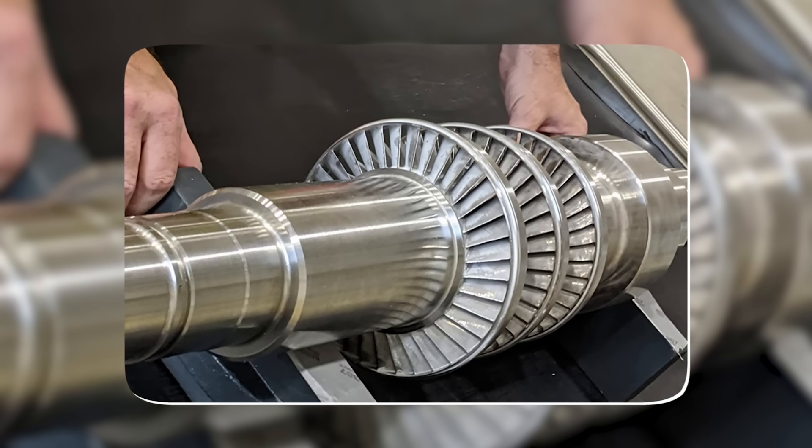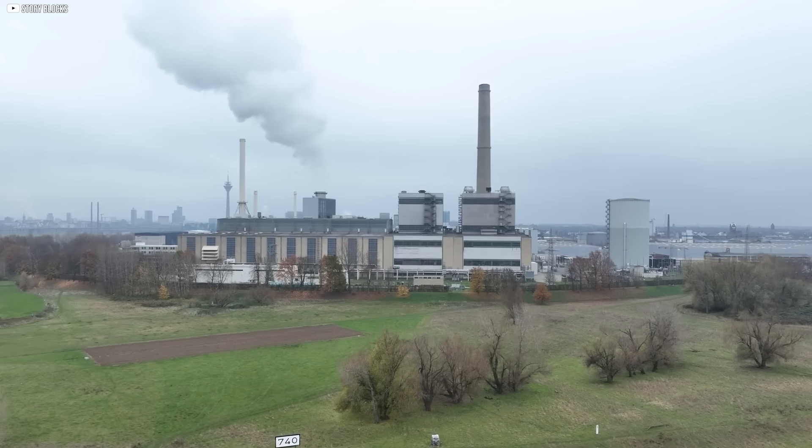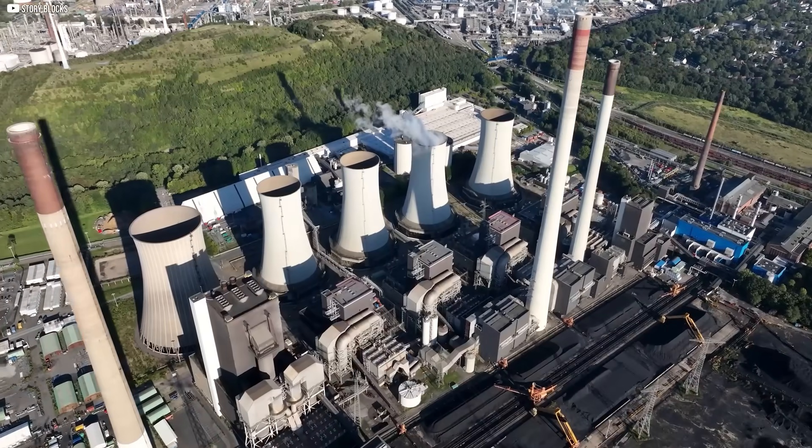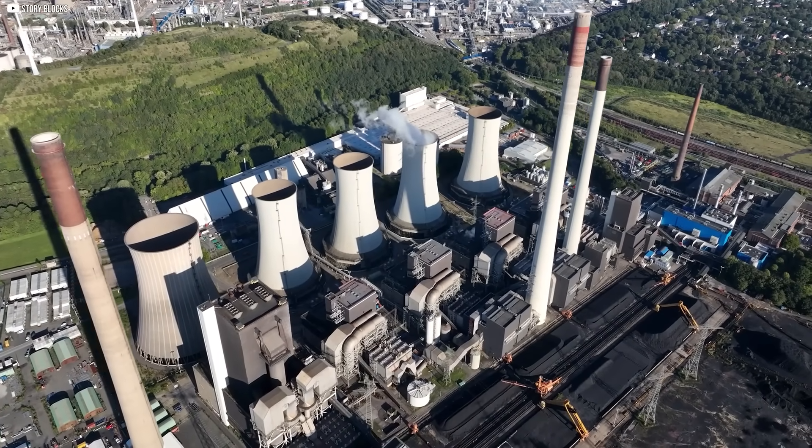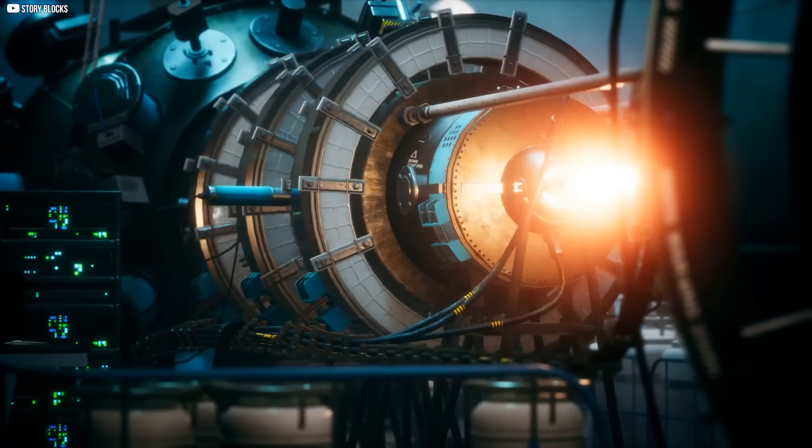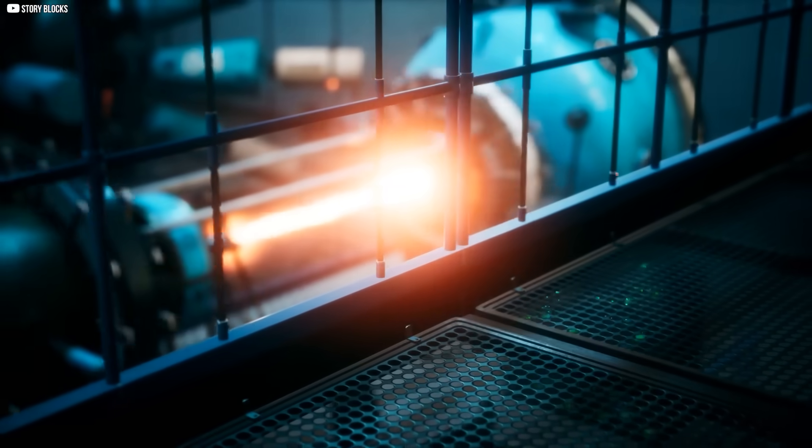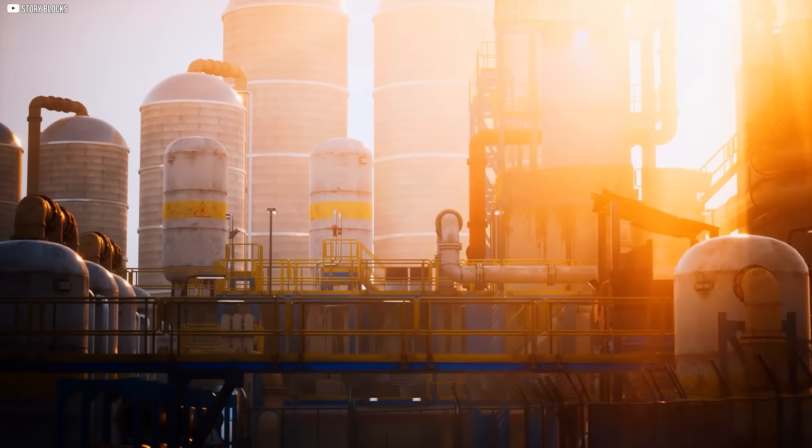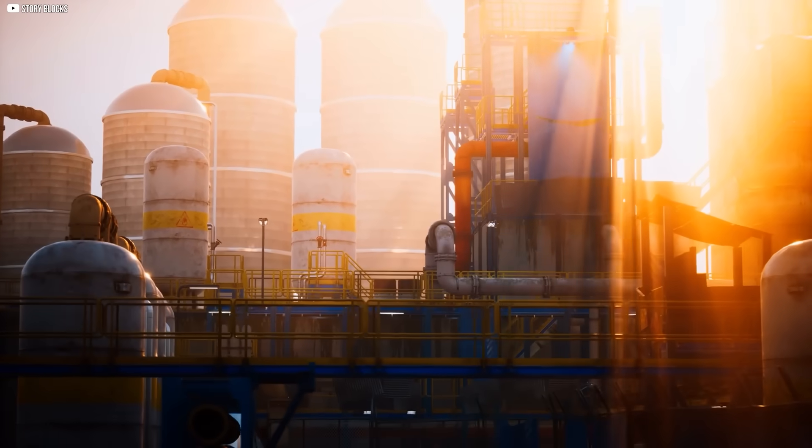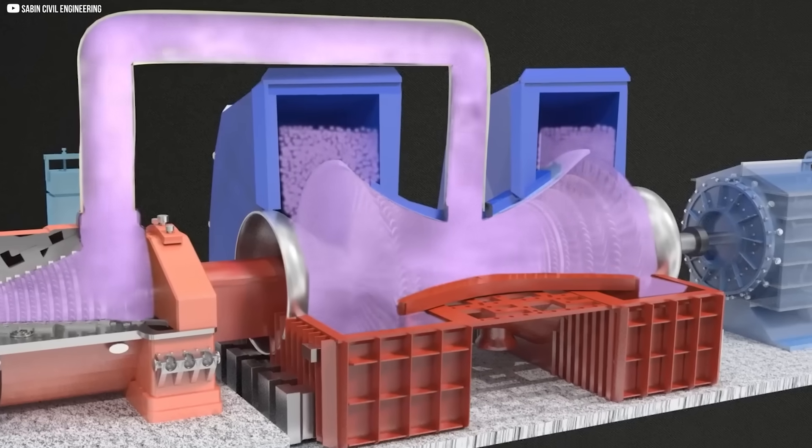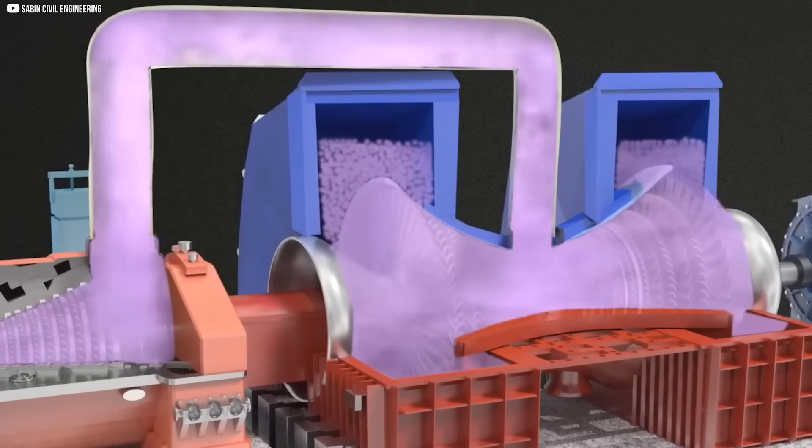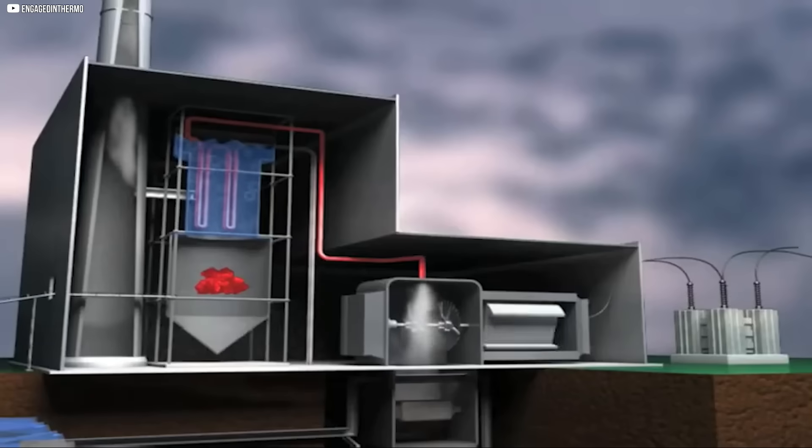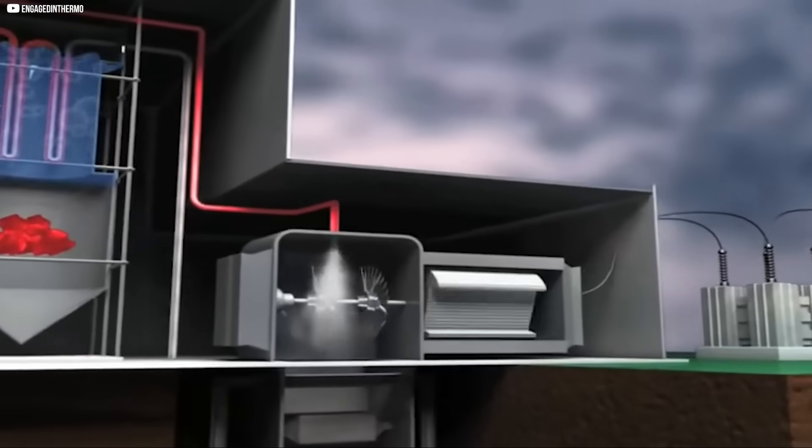The Quiet Efficiency Revolution. What makes these turbines so important is not only their size, but also their ability to use energy more effectively. In power generation, efficiency is everything. Every fraction of heat that can be captured and turned into electricity reduces waste and lowers cost. Supercritical CO2 offers a new way to squeeze more from the same amount of fuel. One reason is density. Because the fluid is heavier than steam, each push against the turbine blades carries more force. That means less material is needed to create the same outcome, and the machine works harder without needing to be larger.